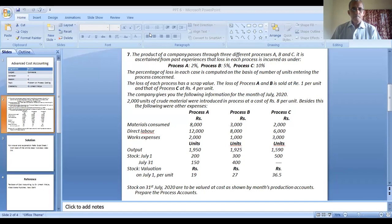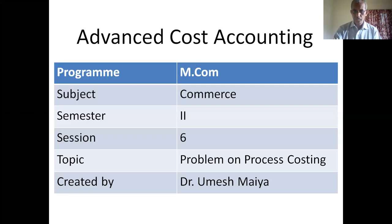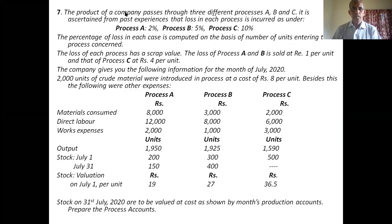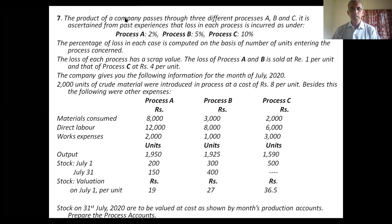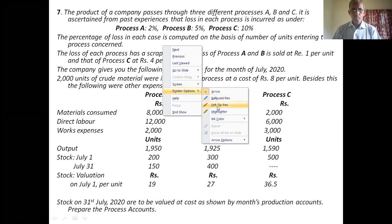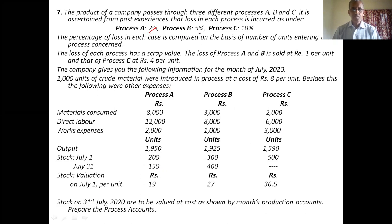Now look at the problem. A product of a company passes through three different processes A, B, and C. It is ascertained from past experience that the loss in each process is incurred as follows: process A — 2%, process B — 5%, and process C — 10%.